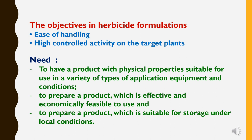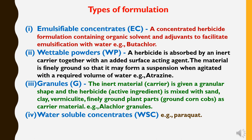What are the objectives of herbicide formulations? First is ease of handling, and second is high control activity on the target plants. What is the need for formulations? First, to have a product with physical properties suitable for use in a variety of application types, equipment, and conditions. Second, to prepare a product which is effective and economically feasible to use. Third, to prepare a product which is suitable for storage under local conditions. On this basis, different types of herbicide formulations are prepared.